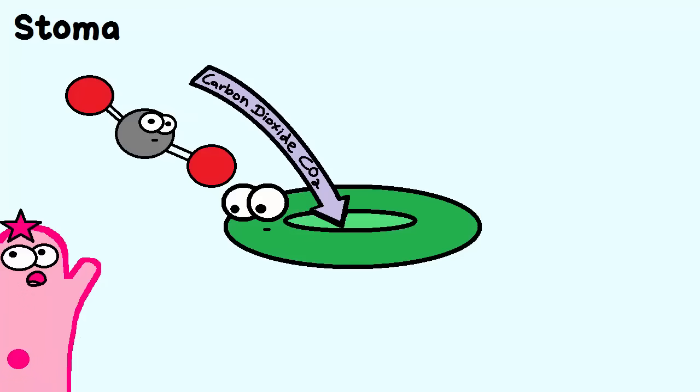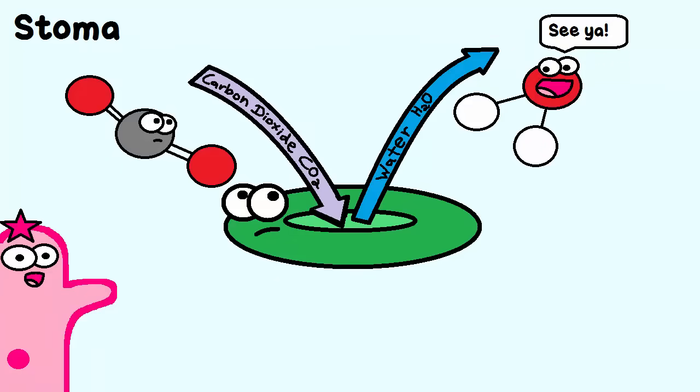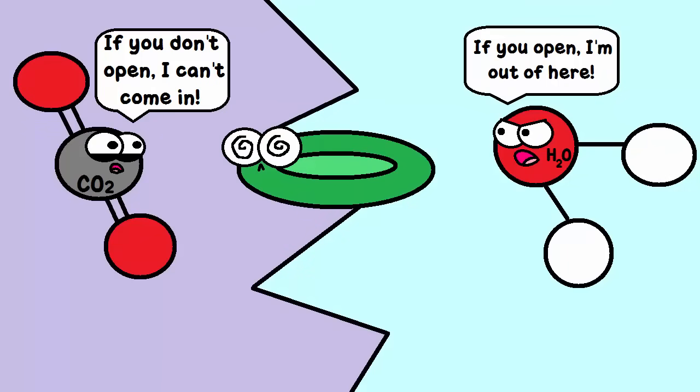There's only one little problem. The plant can't keep those stomata open all the time. Why? Well, water will escape. And remember, plants need water too for photosynthesis. So the plant has to determine whether to open or close its stomata.